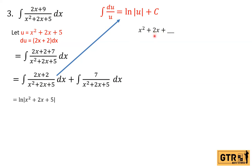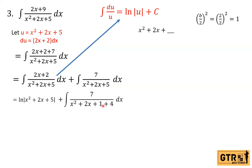The formula for that is one-half of the coefficient of x, squared. So (2 ÷ 2) = 1, and 1² = 1. So we will break the 5 into 1 + 4. Since x² + 2x + 1 is now a perfect square trinomial, we regroup.